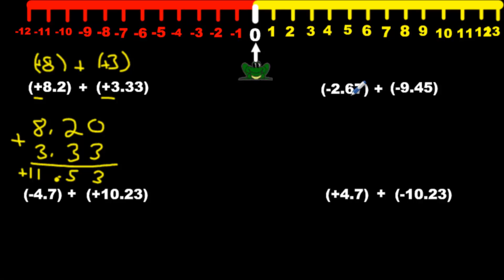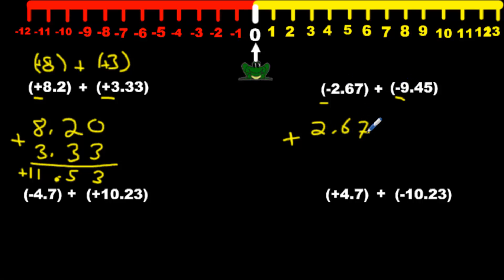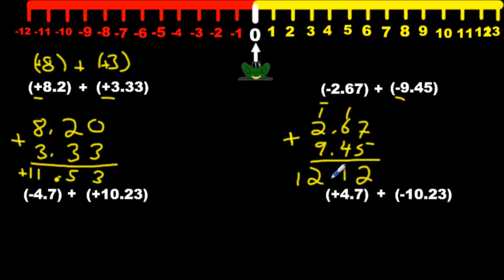Let's move on to question 2. We have negative 2.67 plus that number. The signs are the same, so I have to add. They're both negative — they're the same sign, we just add. We write 2.67 and 9.45 — ignore the signs after that; the signs help us decide if we're adding or subtracting, but ignore them after that. 7 and 5 is 12, carry over; this makes 11, this makes 12. Now we look at the bigger number ignoring the signs: 2 versus 9 — 9 wins. Look at the sign: negative. So we stick it right in front. They're both negatives, so it wouldn't have made a difference, but that's the way you would do it.